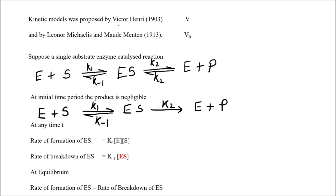In the previous class we saw how Henry, Michaelis, and Menten together gave the equation to understand the kinetics of the enzyme, which was termed the Michaelis-Menten equation. The only difference between Henry's derivation and that of Michaelis and Menten was that Henry calculated velocity at any time, whereas Michaelis and Menten used a more simplified approach taking the initial velocity to calculate the equation.